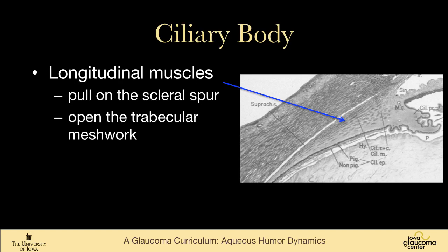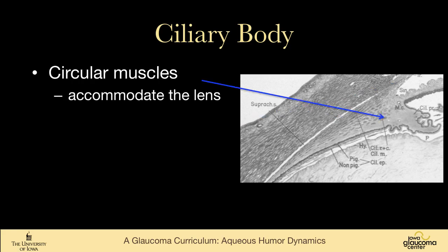The ciliary body is made up of multiple structures. The longitudinal muscles pull on the scleral spur, and that opens up the trabecular meshwork to increase aqueous outflow. The circular muscles accommodate the lens, and that's why when we give cholinergic agonists such as pilocarpine to lower intraocular pressure by pulling on the scleral spur, we also cause the eye to accommodate, which is really not what we want.